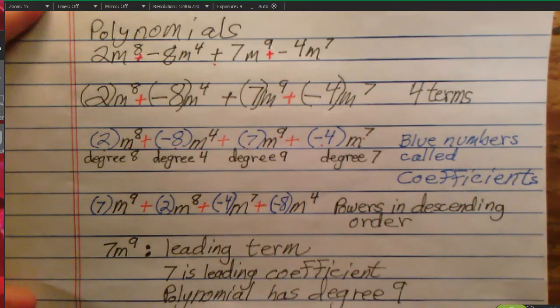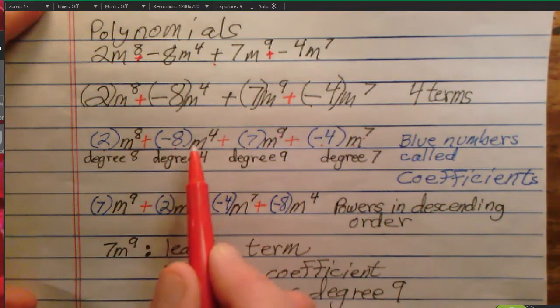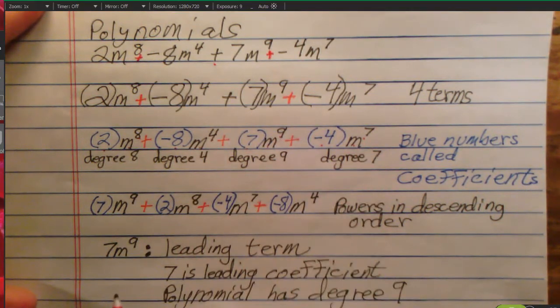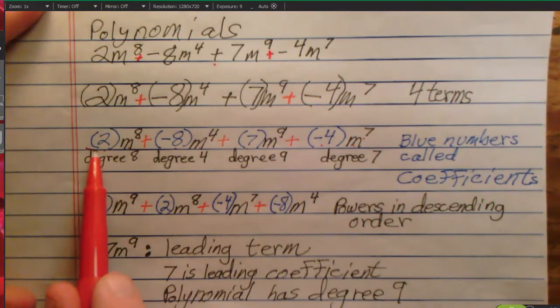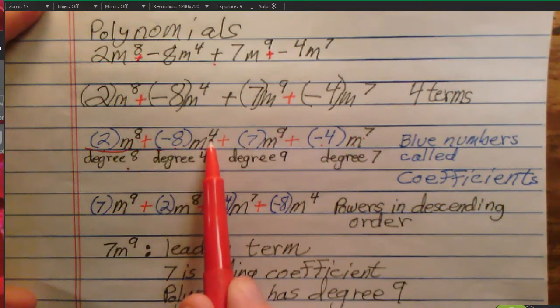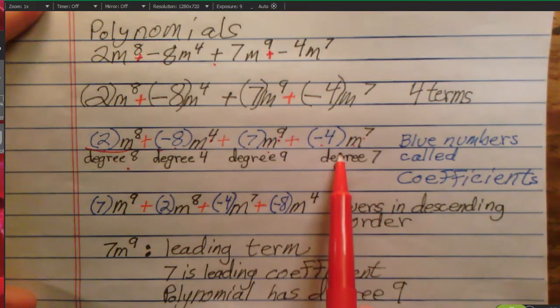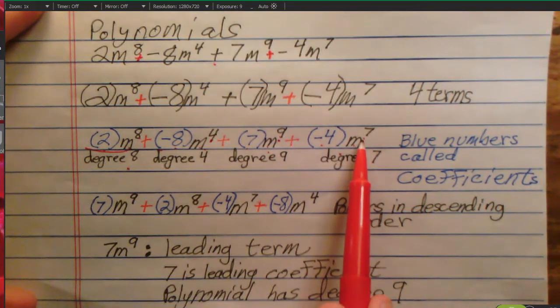Notice I could have said m to the seventh power, m to the ninth power, and so on, but it's enough just to say m to the seventh. Now look at the exponent on each term. That tells you what the degree of the term is. The degree of this term is 8. The degree of this term is 4. The degree of this term is 9. And the degree of this term is 7.